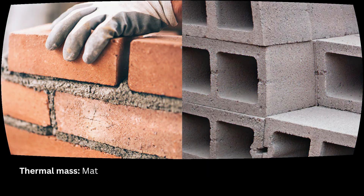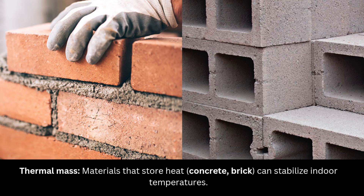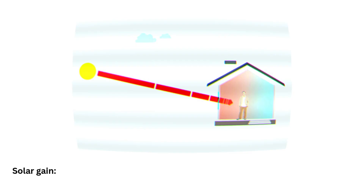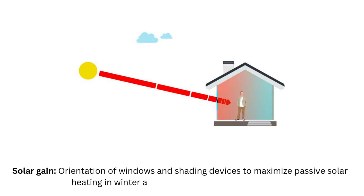Thermal mass: materials that store heat, such as concrete and brick, can stabilize indoor temperatures. Solar gain: orientation of windows and shading devices to maximize passive solar heating in winter and reduce overheating in summer.